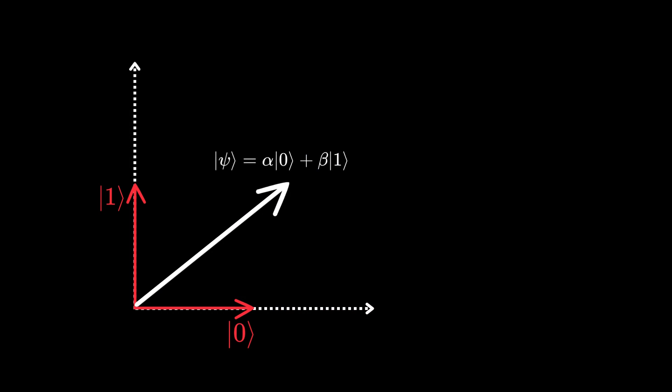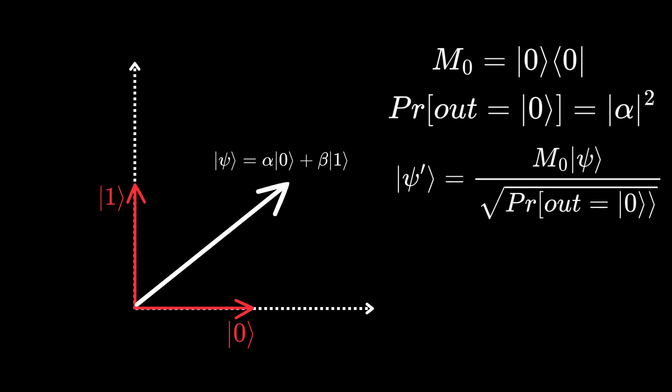The spin of the silver atom exists in the superposition of two main states, encoded as zero and one. This means it is a linear combination of zero and one. The M0 operator is a projection onto the horizontal line. The projection result is alpha zero. Consequently, the probability of observing zero is the magnitude of alpha squared. The state of the system after measurement becomes the projected vector normalized by the scalar of the square root of the probability of observing the state zero.